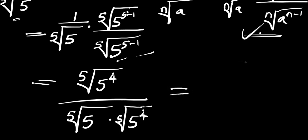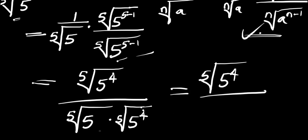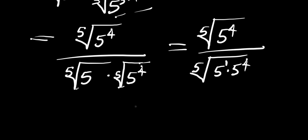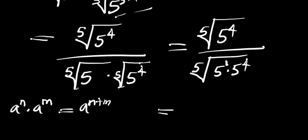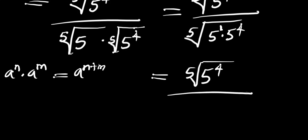This gives us the fifth root of 5 raised to the power of 4 in the numerator, divided by the fifth root of 5 times the fifth root of 5 raised to the power of 4. Since the fifth root of 5 is the same as 5 raised to the power of 1, we apply the identity a^n times a^m equals a^(n+m), adding 1 and 4 to get 5. So the denominator becomes the fifth root of 5 raised to the power of 5.